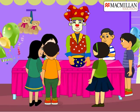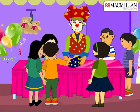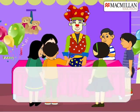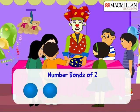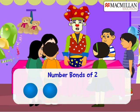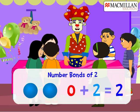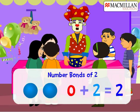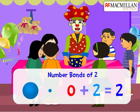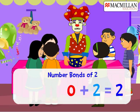Let's have another kid draw the balls. You have got two blue balls. That means we can add zero red balls with two blue balls to get two balls.